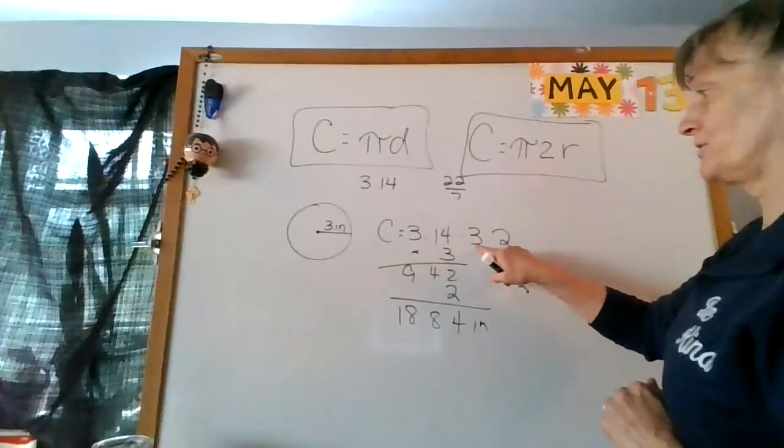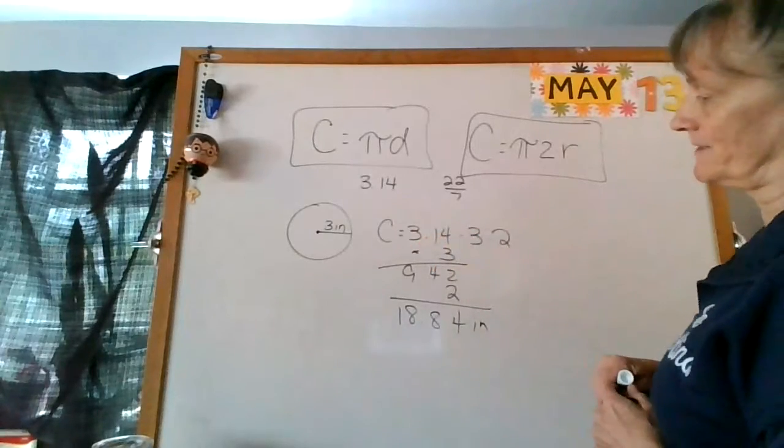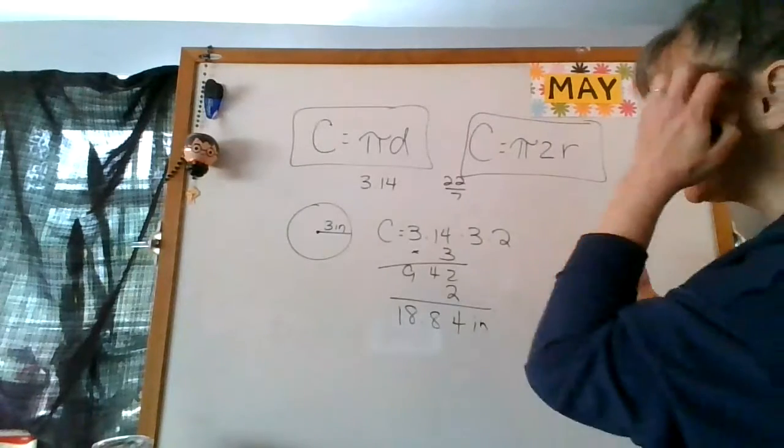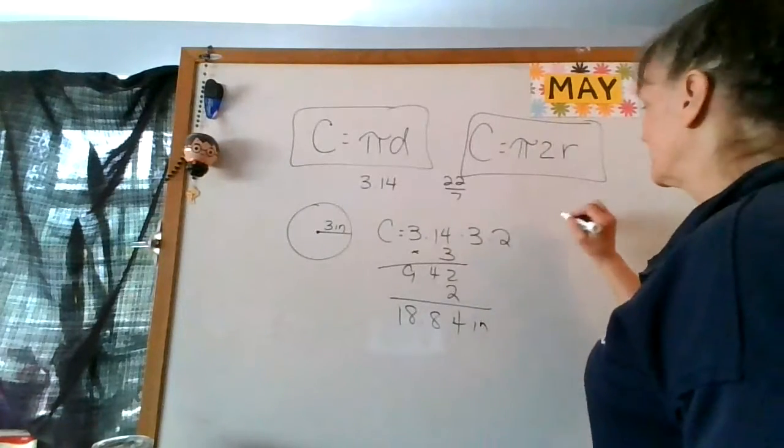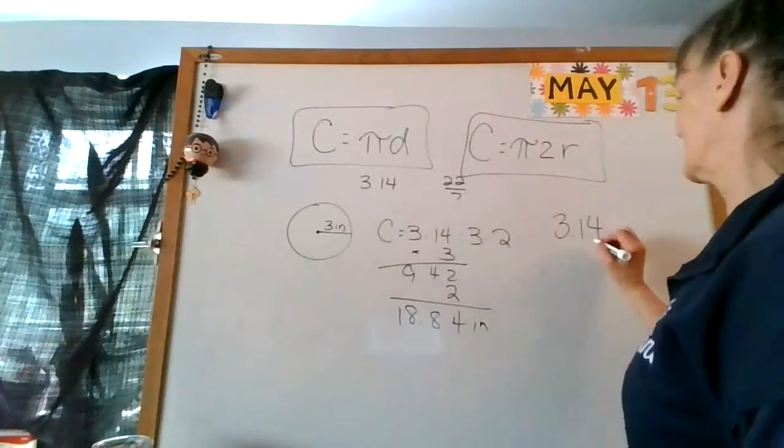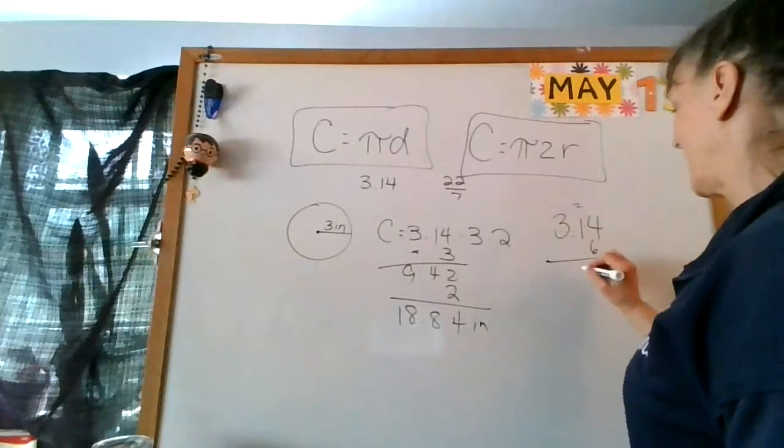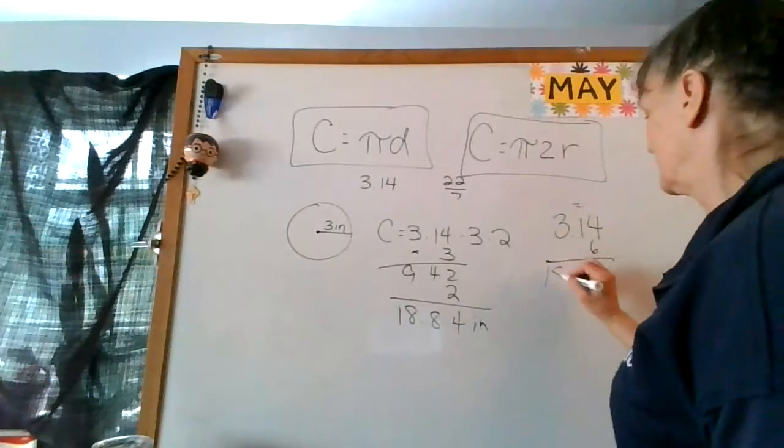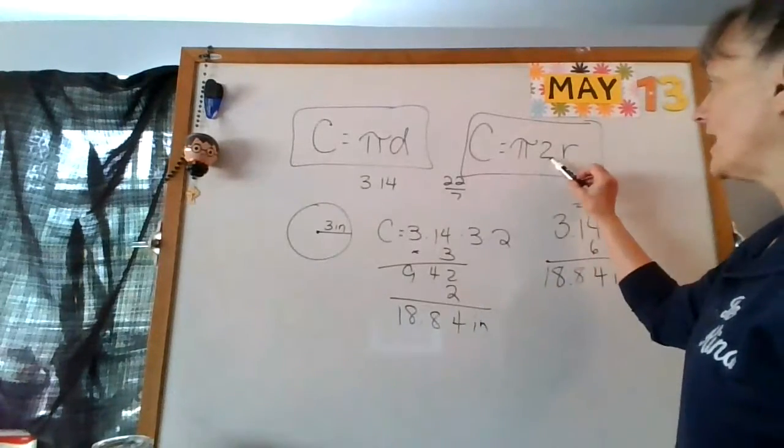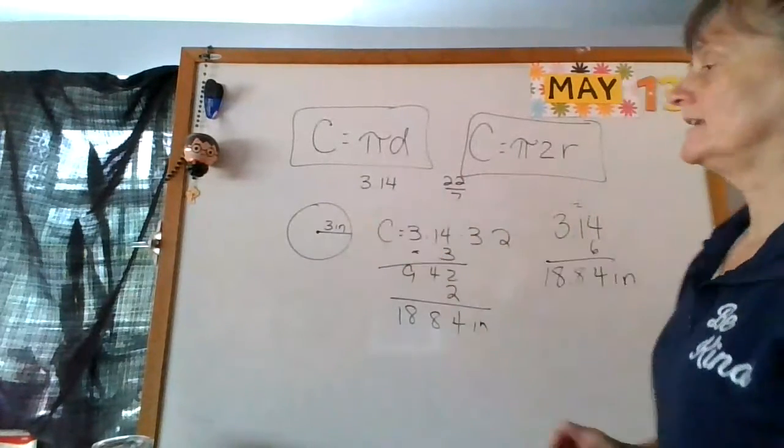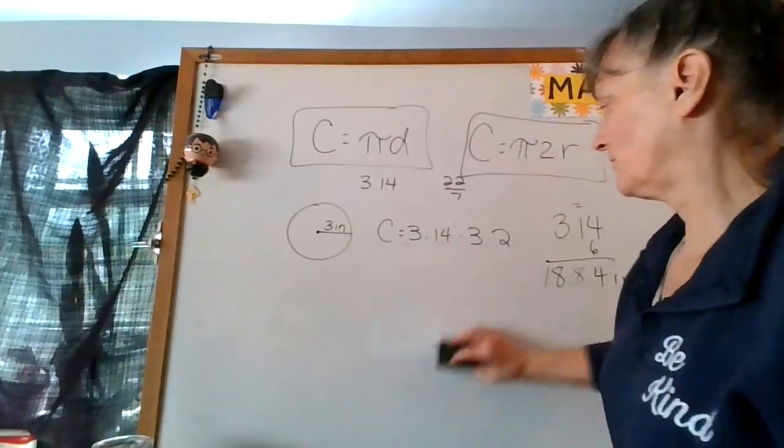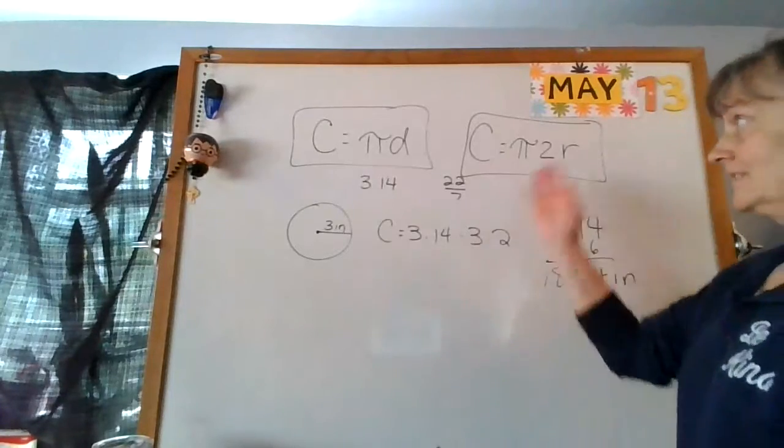The faster way to do this would have been 3 times 2 is 6, and then just do 3.14 times 6. Sorry, trying to go fast. I would have done 3.14 times 2 times radius 6. This would save me time. 6 times 3 is 18, 18.84 inches. I multiply 2 times my radius and then multiply it by 3.14.